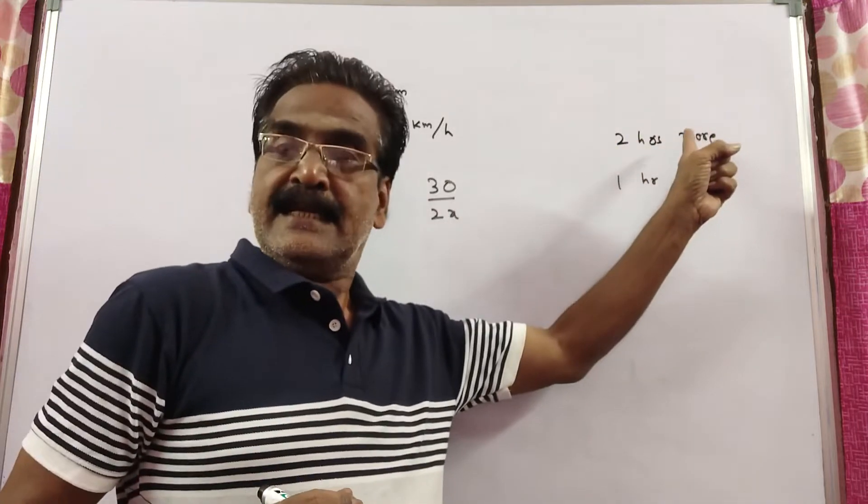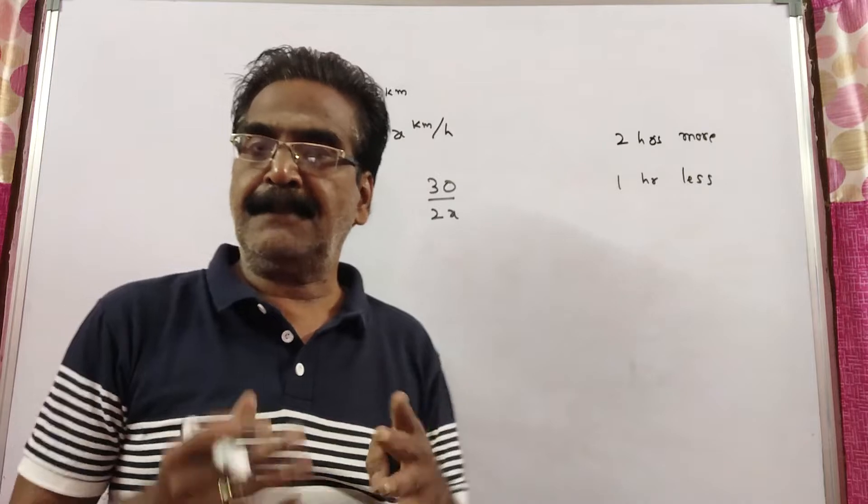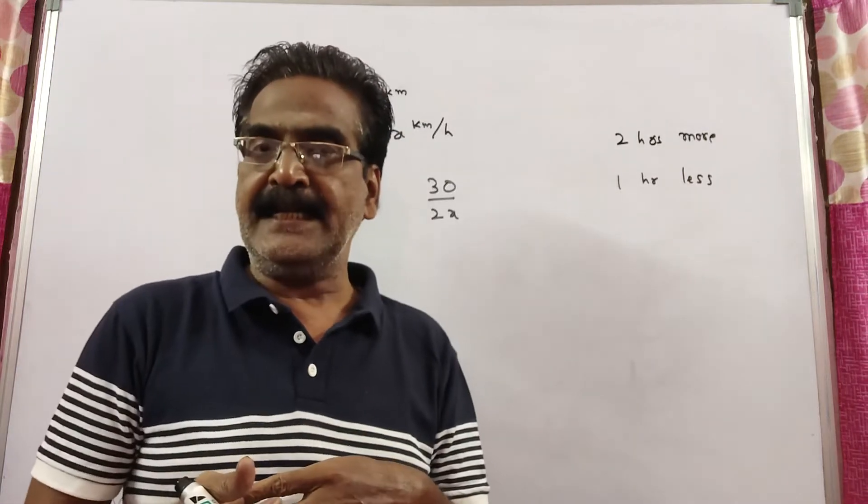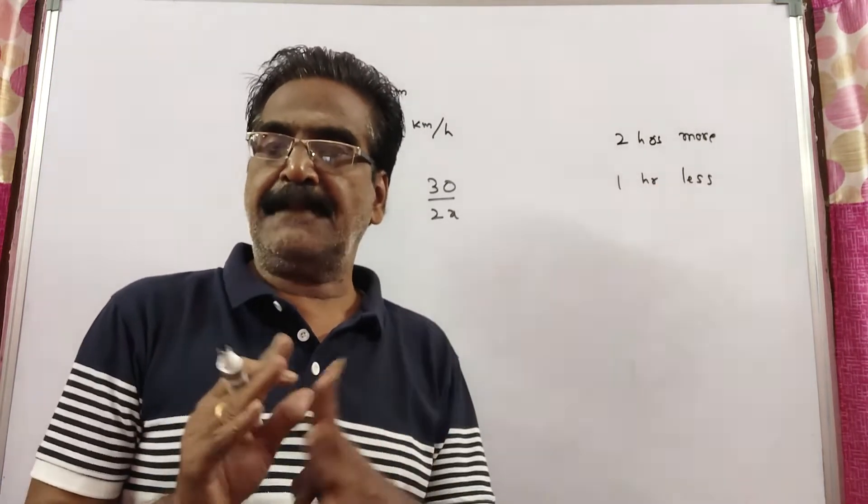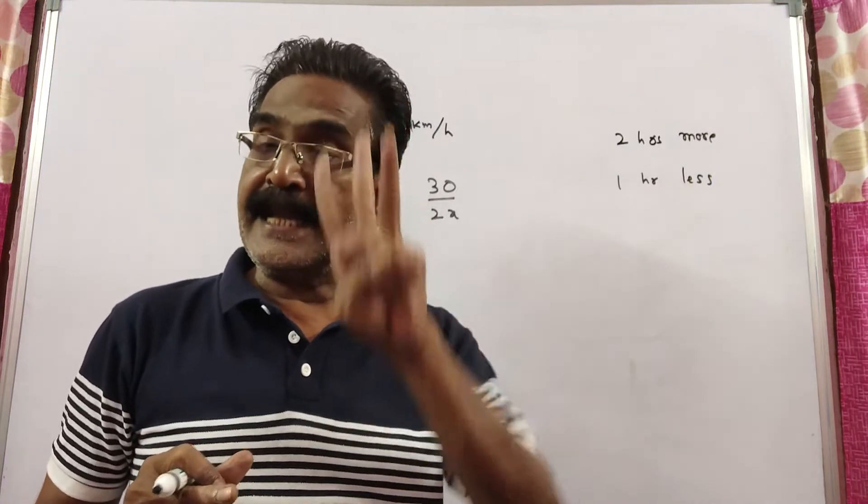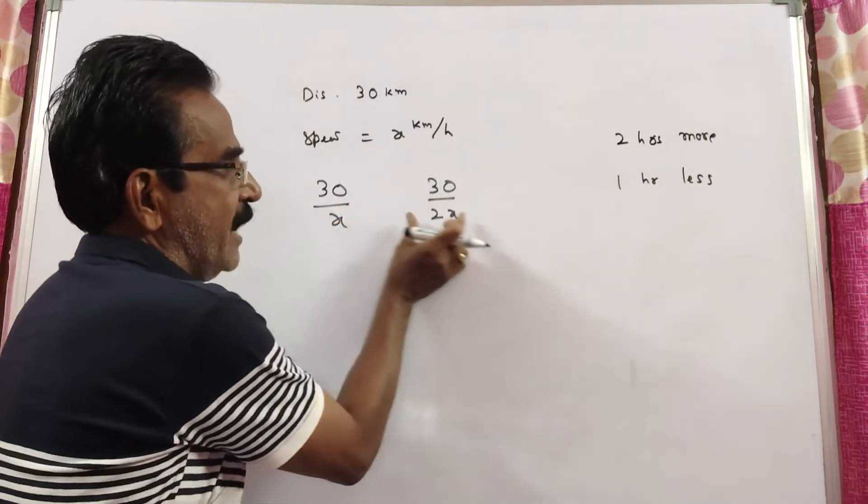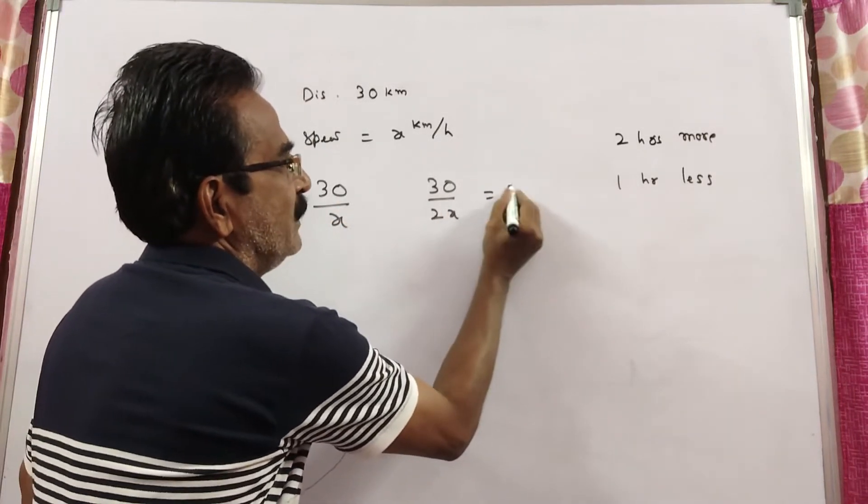Now, earlier he takes 2 hours more than Anil, but by now doubling his speed, he takes 1 hour less than Anil. That means by doubling his speed, he gained 3 hours. That means the difference between this and this is equal to 3 hours.